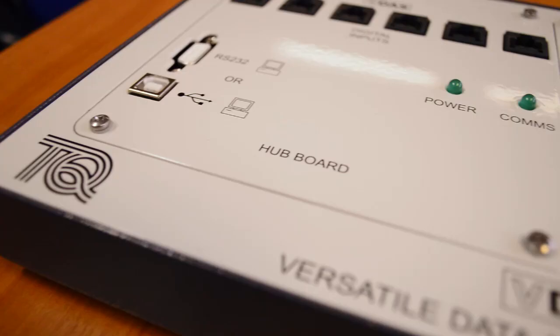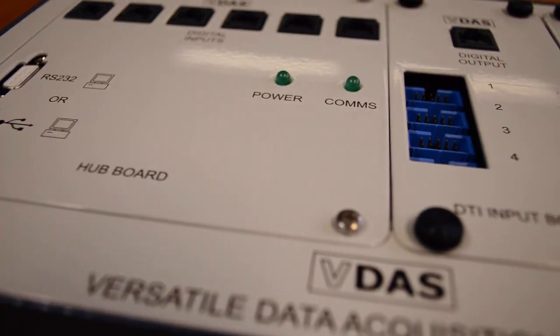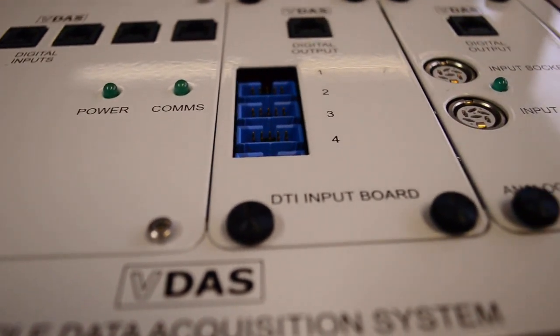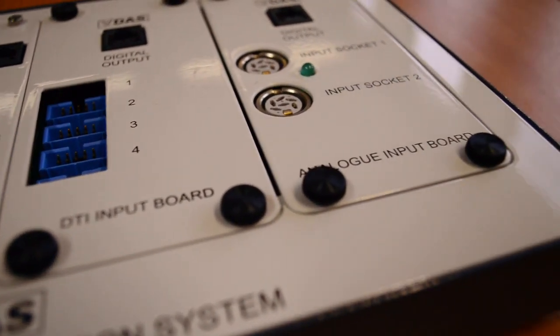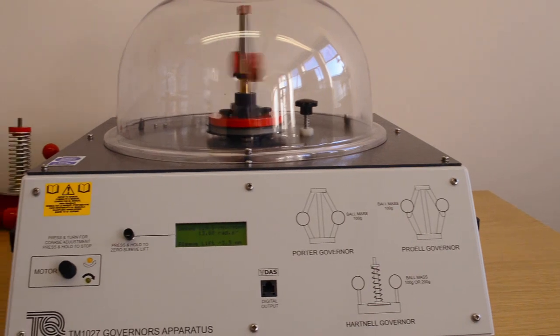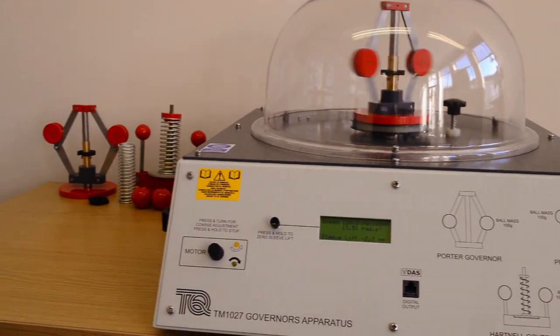The TM1027 works with Tech Equipment's versatile data acquisition system, which allows for accurate real-time data capture, monitoring and display, calculations and charting. The clear dome includes an interlock that shuts off power to the motor.